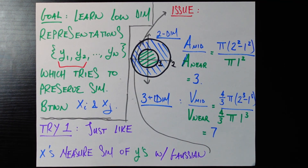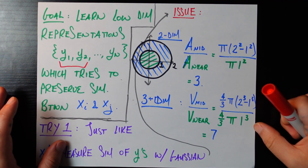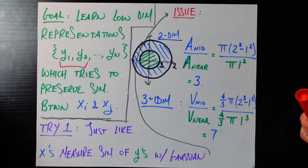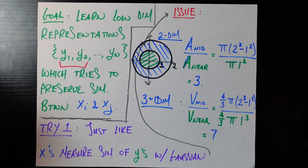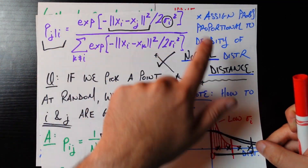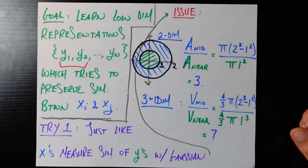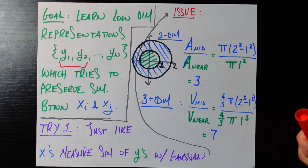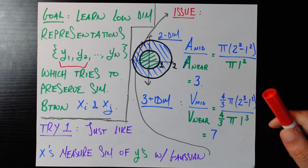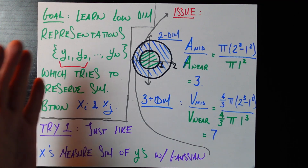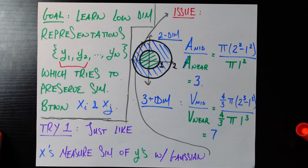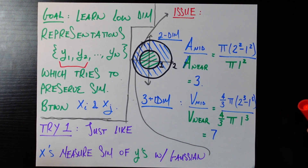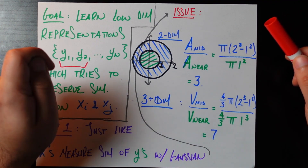How are we going to actually do this? Why not just try the most straightforward thing first — just like with the x's, where we measured similarity using a Gaussian framework, do the exact same thing with the y's. Measure them using the Gaussian, and you'll have some values q_ij, which are the similarities between the y's. Then all you need to do is make sure the q_ij's and the p_ij's are similar to each other. That's a great first attempt, but we should talk about a very subtle thing that goes wrong when we do that.